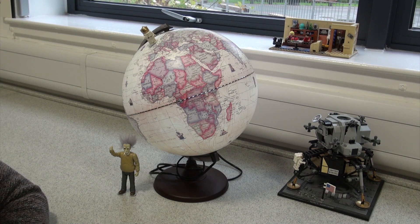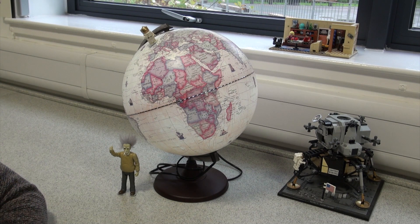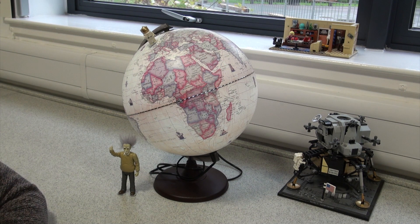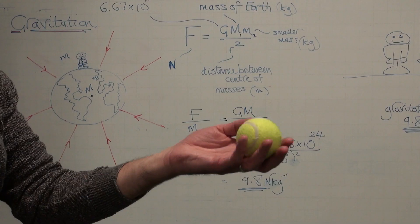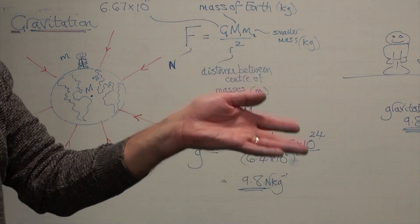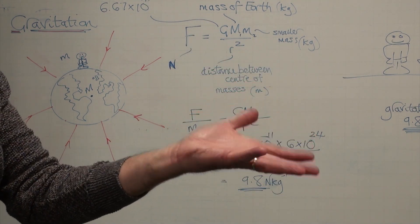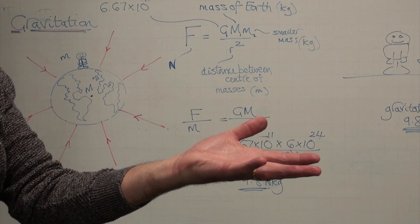Hello everybody, we're talking about all things gravitation this morning. We're going to try and answer some questions. For example, how far away would you have to be from the Earth for the gravitational field's strength to be zero? And how much energy would you have to use to escape from the Earth's gravitational field? And if you were to throw a ball vertically upwards from the surface of the Earth, how fast would it have to be going for it to escape from the Earth's gravitational field?